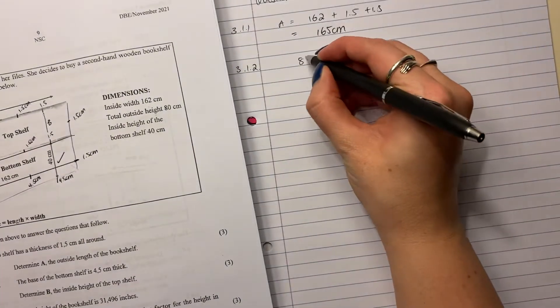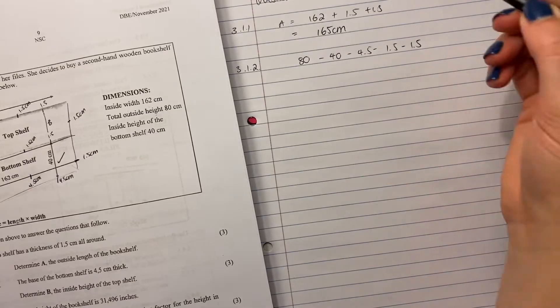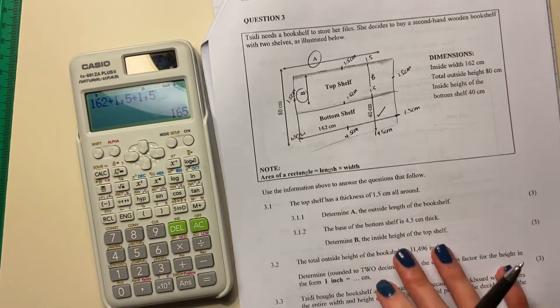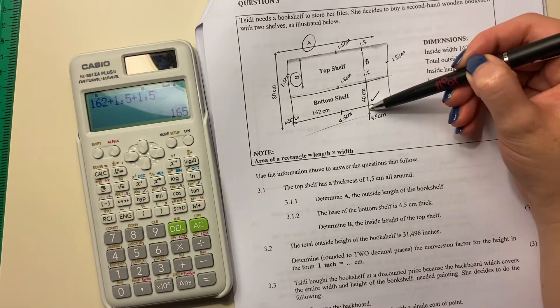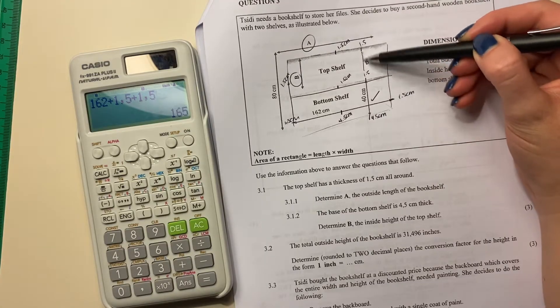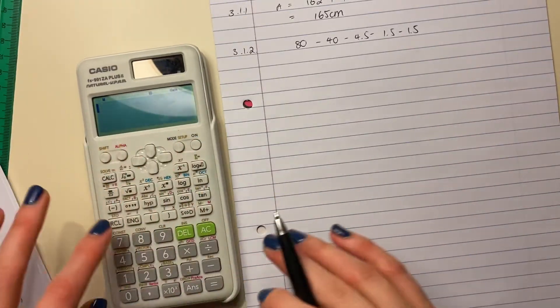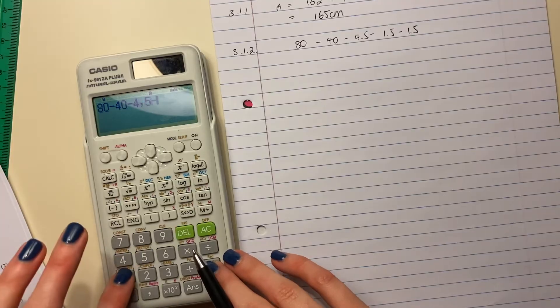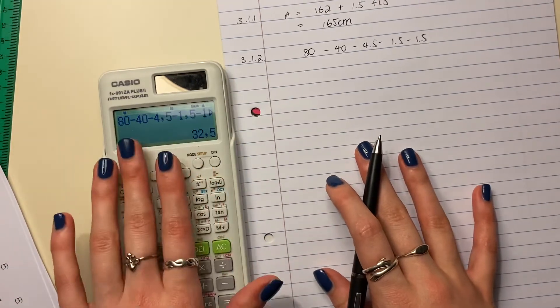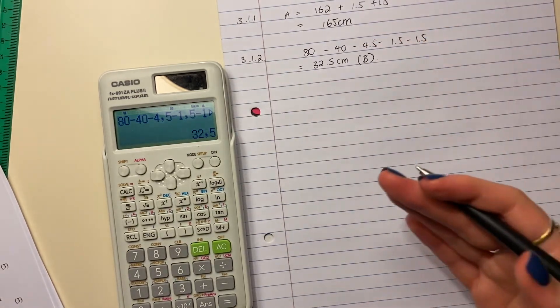So we're going to say, well, 80 is how much all of that height is together. And I'm going to take off all of those different measurements that I know. And what is left will basically equal b. So I took off the 4.5, which is at the bottom here, the thickness at the bottom. Then I took off the inside height. Then I took off the thickness of the shelf, then I took off the thickness of the shelf at the top. And then what's left is basically whatever height would be the height of the top shelf. So if we do that, and I put that all into my calculator, my answer would be 32.5 centimeters. And then you can just say that equals b.